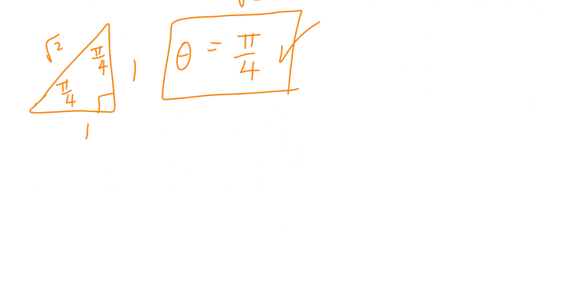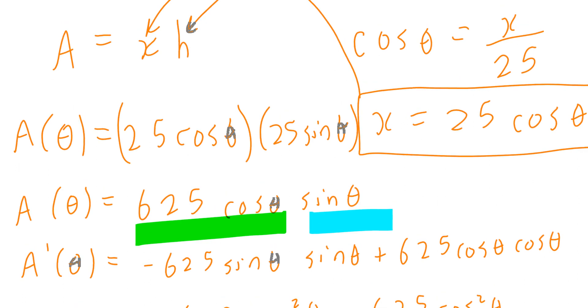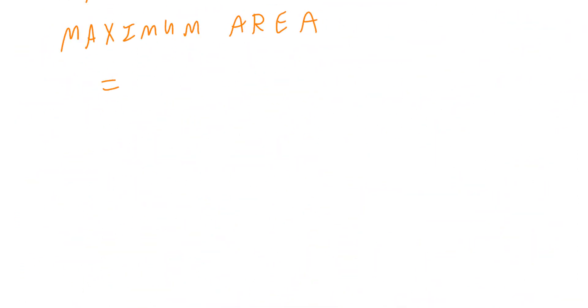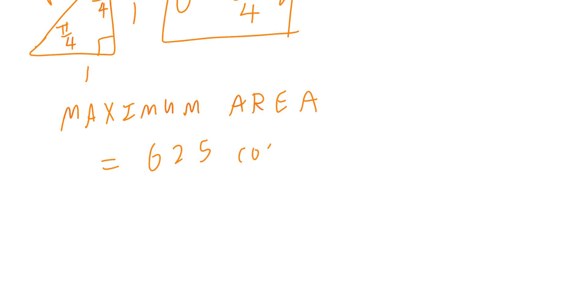The question is asking, what is the maximum area? So now we go back and we write down maximum area equals to, don't forget, it was 625 times cosine theta times sine theta. So it's going to be 625 times cosine of pi divided by 4 times sine of pi divided by 4. You can use the calculator in radian mode or do mental math. This is 1 over 2 and this is also 1 over 2. When you work it out, 625 divided by 2, or if you leave in exact form, it's going to be 312.5 centimeters squared. Therefore, the maximum area is 312.5 centimeters squared. I hope this makes sense.